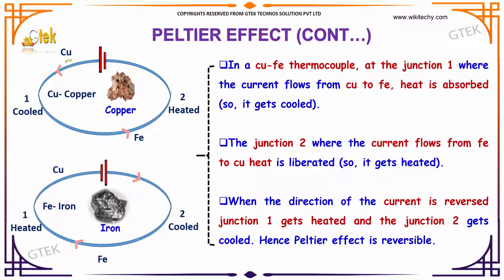In a copper and iron thermocouple, at junction J1 where the current flows from copper to iron, heat is absorbed, so it gets cold here. At junction J2 where the current flows from iron to copper, heat is liberated. When the direction of the current is reversed, at junction 1 it gets heated and junction 2 is cooled.